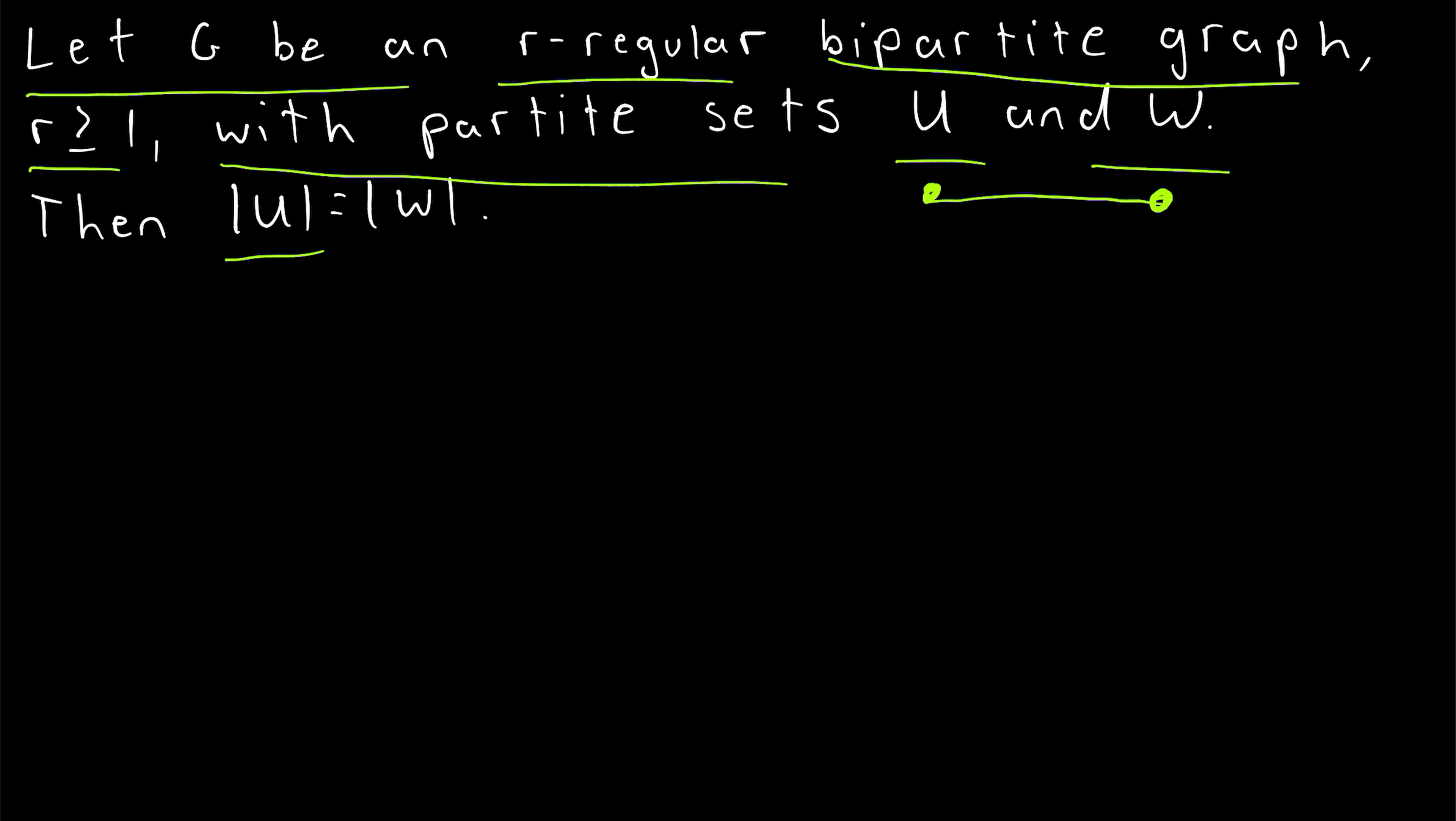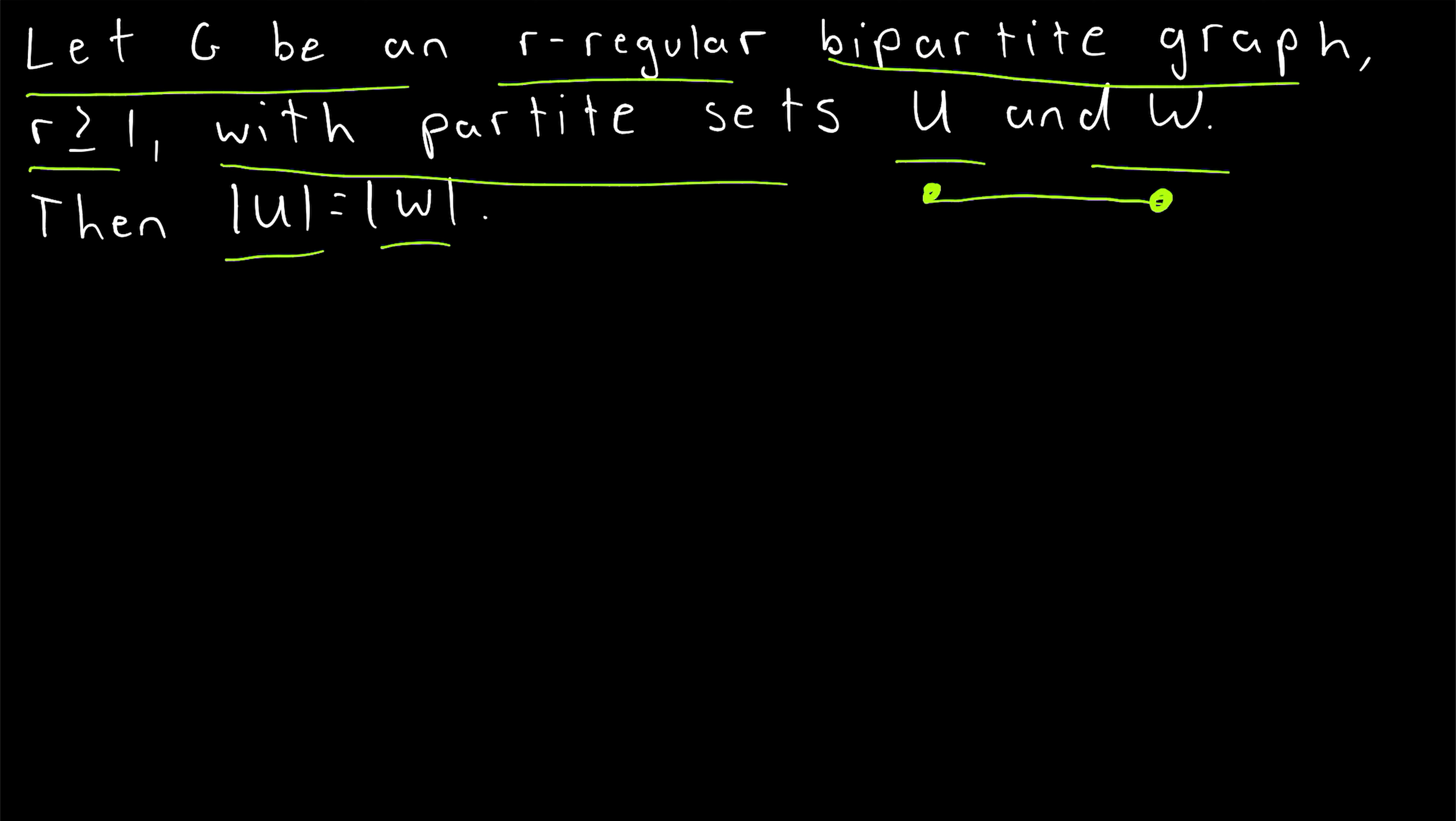Then the cardinalities of U and W, the partite sets, are equal. And when the partite sets of a bipartite graph have the same number of vertices, we call the graph balanced.